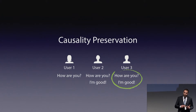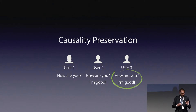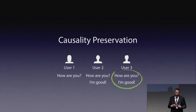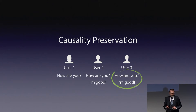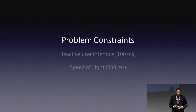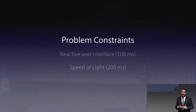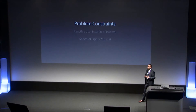User three first needs to see the question before he sees the answer. This is how we express causality preservation. This is a way to model the problem.